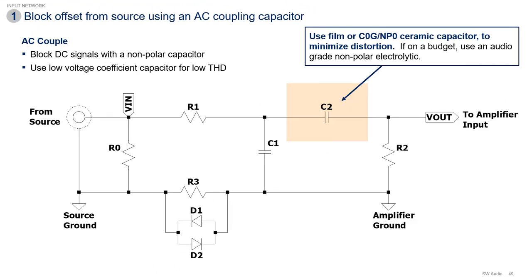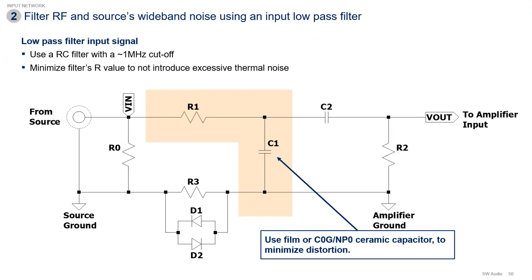Capacitor C2 AC-couples the input signal, blocking any DC from the source. C2 must be a high-quality capacitor — one with very low voltage coefficients to keep the distortion low. C2 will experience the input voltage from the source, so the last thing you want is for this capacitor to alter the signal before it even gets amplified. Resistor R1 and capacitor C1 form a single-pole low-pass filter that will filter any RF signals coupled to the signal source. A 1 MHz cutoff frequency or thereabouts will do for this filter. It is also a good idea to use a high-quality capacitor for C1 since it will experience the full signal swing of the input signal, though it is not as critical as C2 because C1 will be much, much smaller in value.